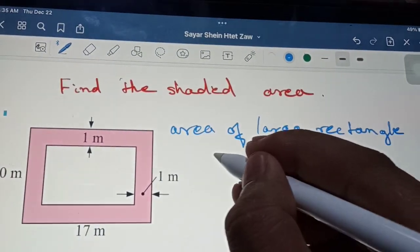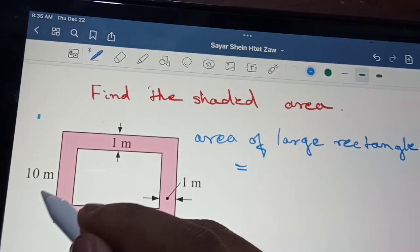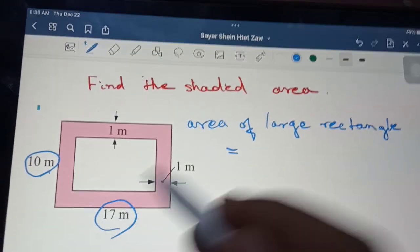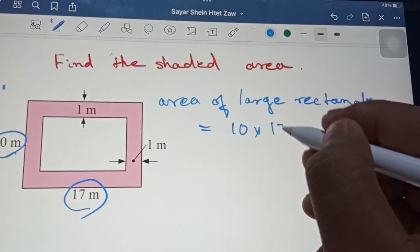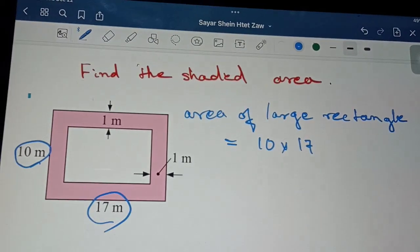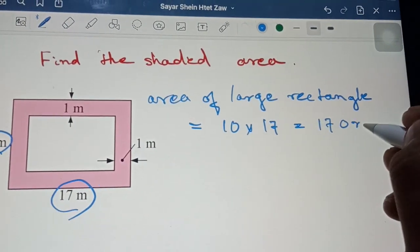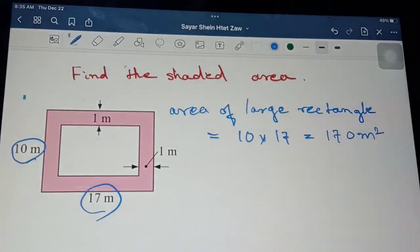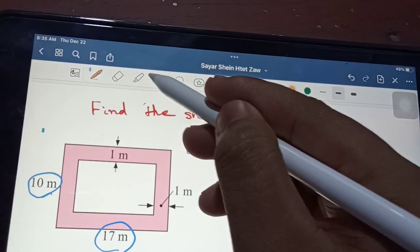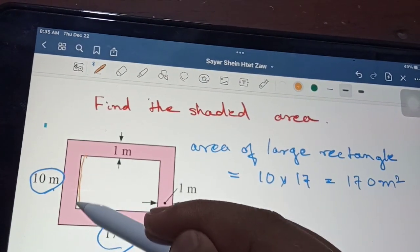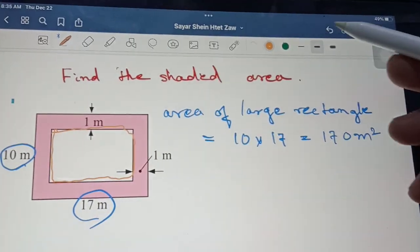Area of the large rectangle - I get the area. 10 multiply something, 10 multiply something equals 100 something meter square. Area of the large rectangle, area of smaller rectangle.